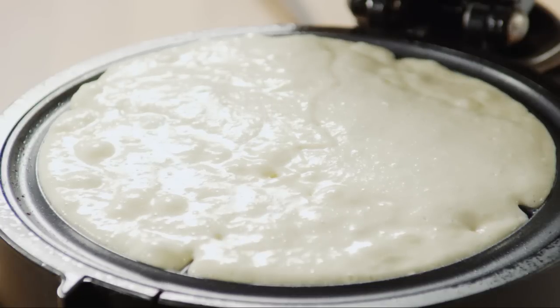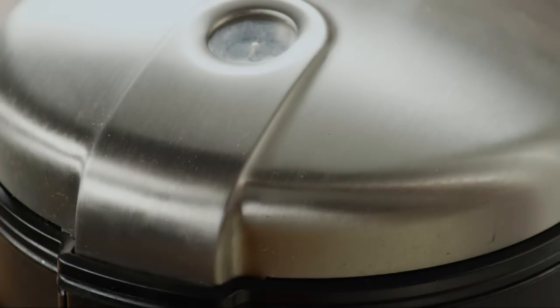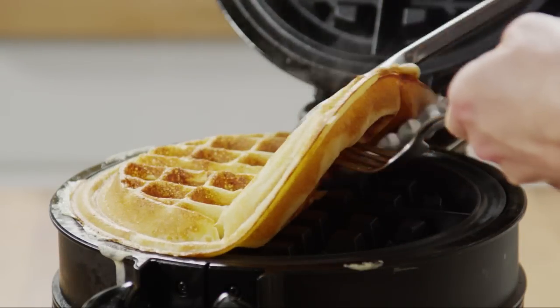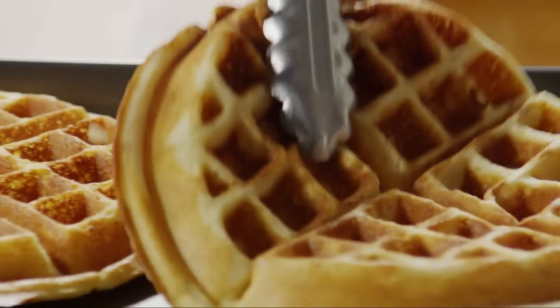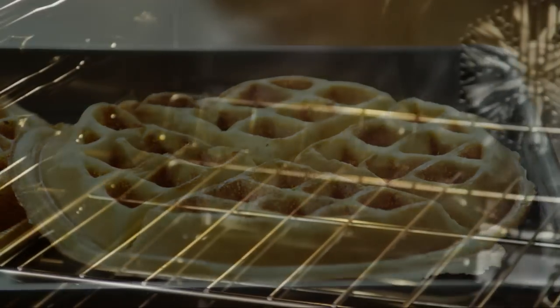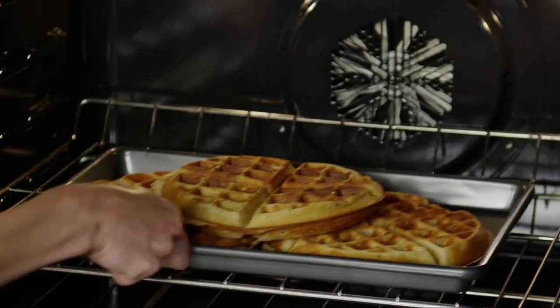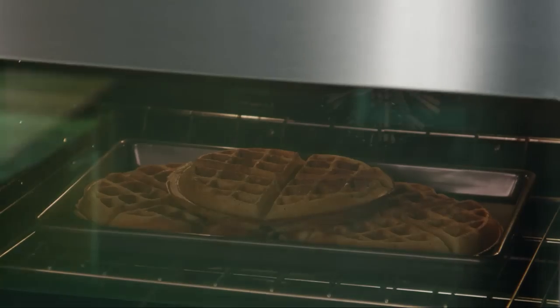Close the lid and bake until the batter stops steaming and the waffle is golden brown. You can serve each waffle as it comes off the iron, or keep them warm in a 200 degree oven while you bake the remaining waffles.